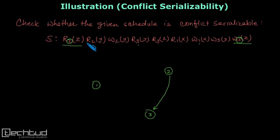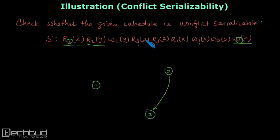Now, do we have other conflicting operations from R2? Next is R2Y. When we check R2Y, we look on the same variable Y to see if some other transaction is performing a write, because read can only conflict with write. On Y, transaction 3 is performing a write. So this is a conflicting operation and the edge is from 2 to 3, which we already have.